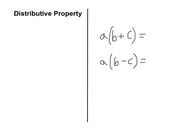Lastly, we have the distributive property, sometimes called distributive laws. If you have a distributing over the quantity b plus c, you get a times b plus a times c. Similarly, if you distribute over subtraction, you get a times b minus a times c.